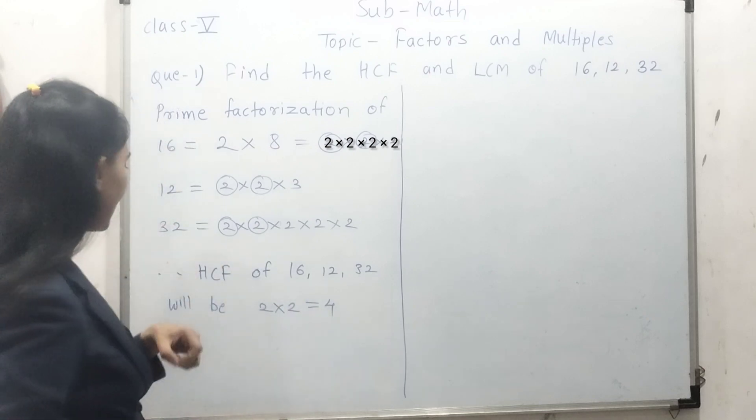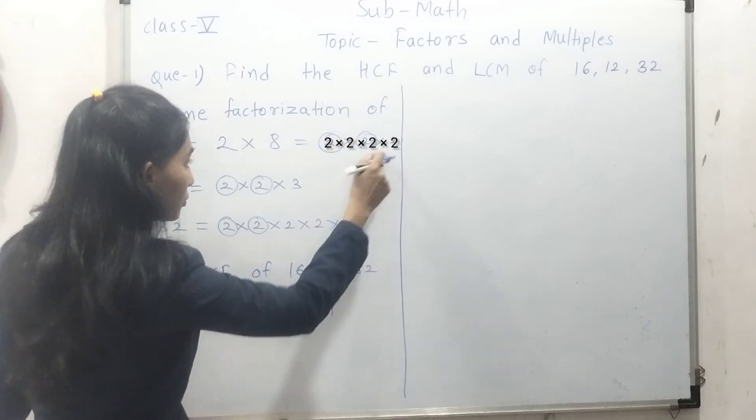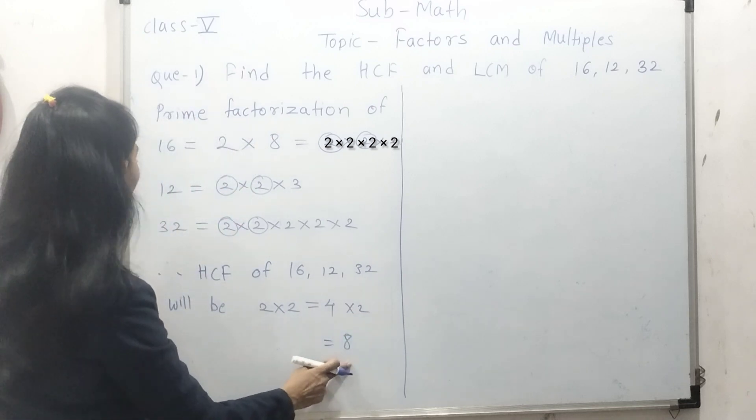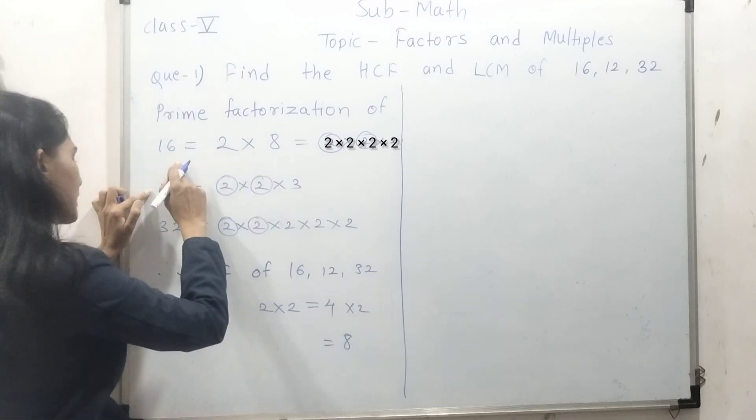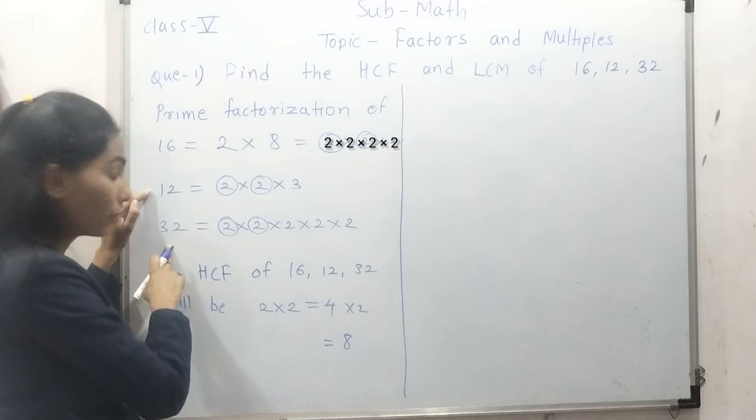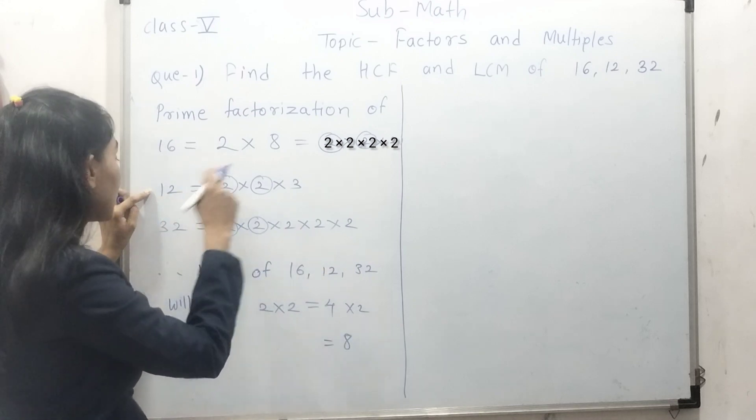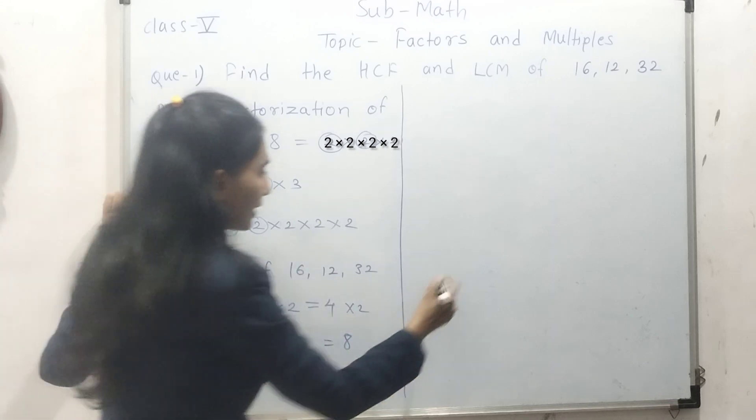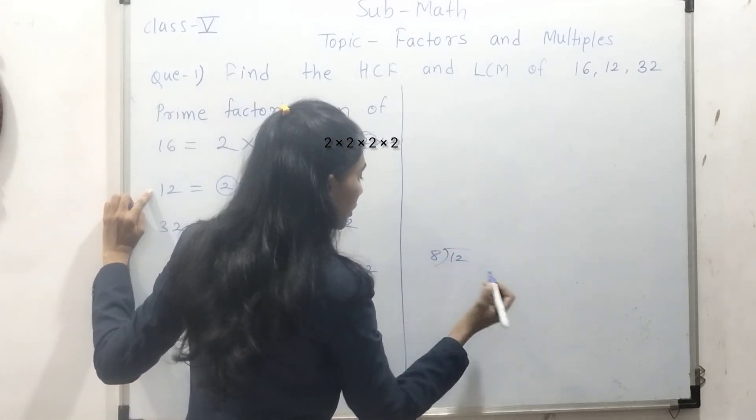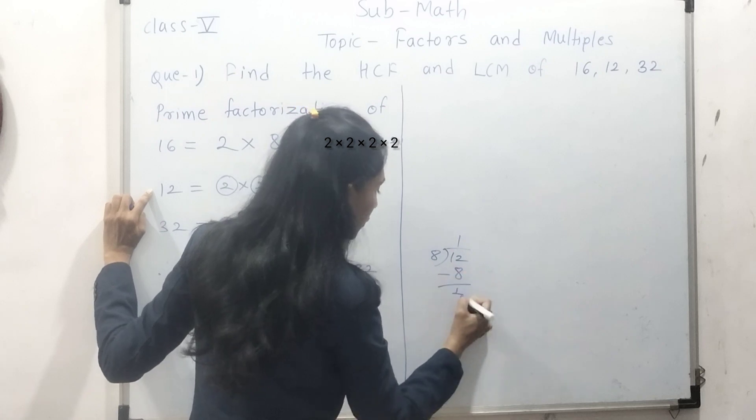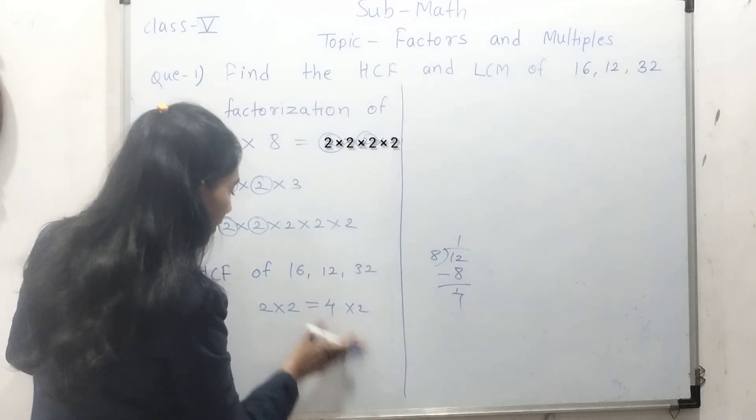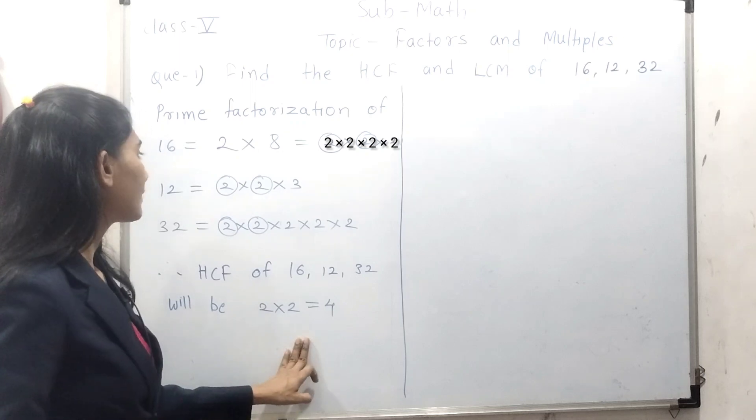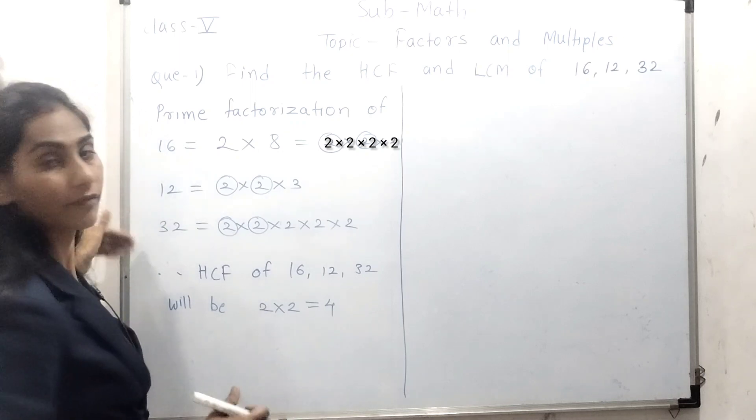If one more 2 we take, it will be 8, and 8 is not a factor of 12. 8 is a factor of 16, 8 is a factor of 32, but it is not a factor of 12 because this 12 is not divisible by 8. If we divide this 12 by 8, we did not get the remainder 0. So here, while finding the HCF, take the number which will be common in all the given three numbers.